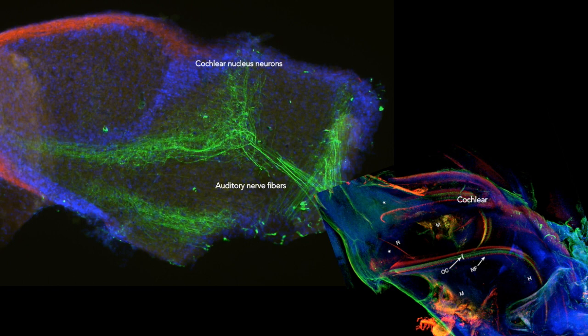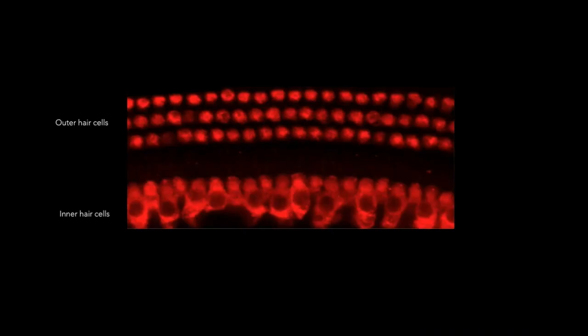So how does tinnitus arise? Knowing how the auditory pathway is built, let's move on to how tinnitus is formed. When we lose hearing cells with age, we say that there is a gradual hearing loss that occurs over time.